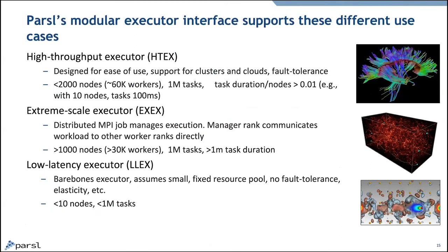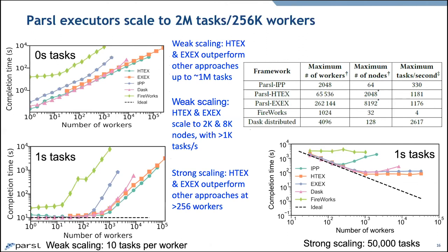On why high-throughput sometimes outperforms extreme-scale: it's not significantly different and I don't know exactly why. What limits maximum workers is the size of the machine and the size of the allocation we could get — some of this was on Blue Waters using a materials-science researcher's allocation. Some limits are hard limits of scale; some are just things we haven't tested at larger sizes yet.